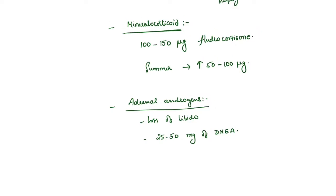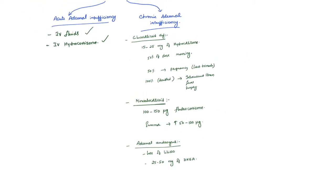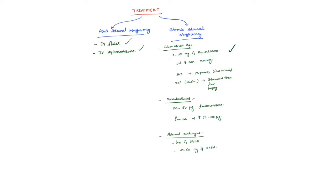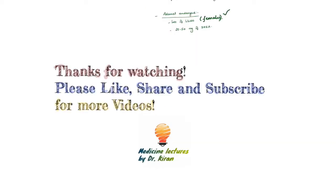So this is how we treat chronic adrenal insufficiency — by giving hydrocortisone to replace the glucocorticoids, fludrocortisone to replace the mineralocorticoids only in primary adrenal insufficiency, and adrenal androgens only when the patient is having severe symptoms like loss of libido especially in females. Thanks for watching, please subscribe for more videos.